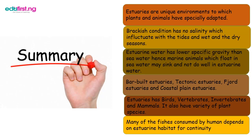In summary: estuaries are unique environments adapted to by animals and plants. The brackish condition has variable salinity. Estuaries have lower specific gravity, making it difficult for ocean-floating animals to survive there. We listed the types of estuaries — bar-built, tectonic, fjord, and coastal plain — and listed the animals, plants, vertebrates, and birds found in estuaries. Many animals consumed by humans depend on estuaries for their survival.